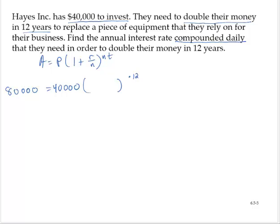To replace the piece of equipment that they rely on for their business. Find the annual interest rate. We don't know r, compounded daily. Since it's daily, that means n is 365, because there are 365 days in a year.